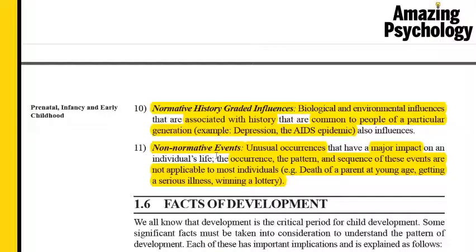Normative history-graded influences refers to the normal historical influences that impact a human being — biological and environmental influences common to people who live within a specific time period or generation. For example, people who went through the Great Depression, World War One and Two, or the AIDS epidemic showed certain common characteristics. All of these common factors that influence people over a generation are seen to impact the way they developed.